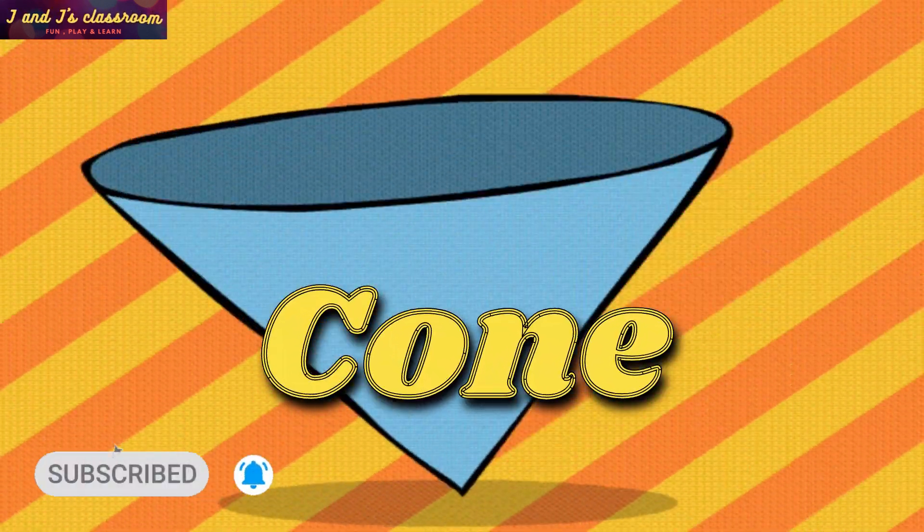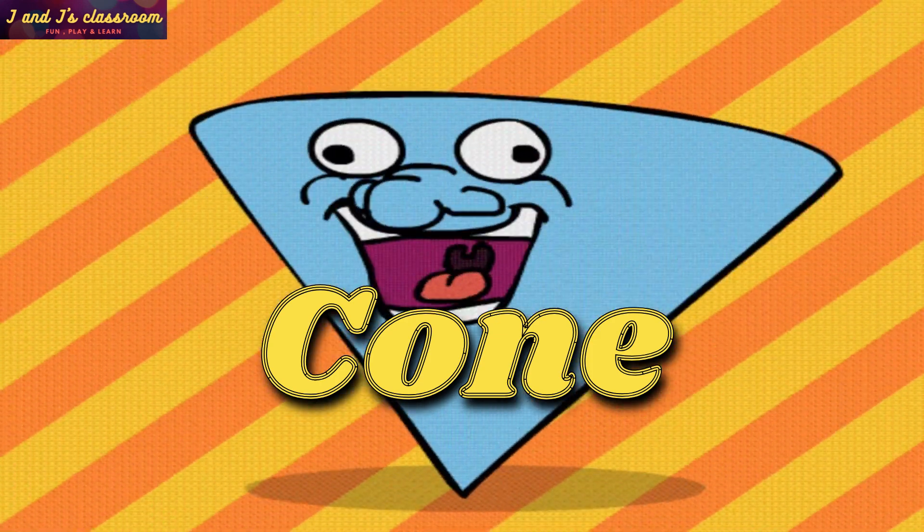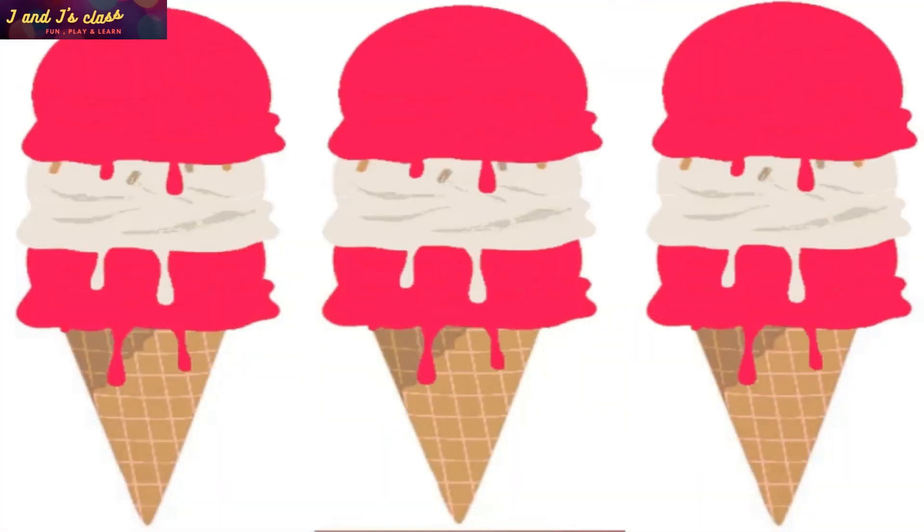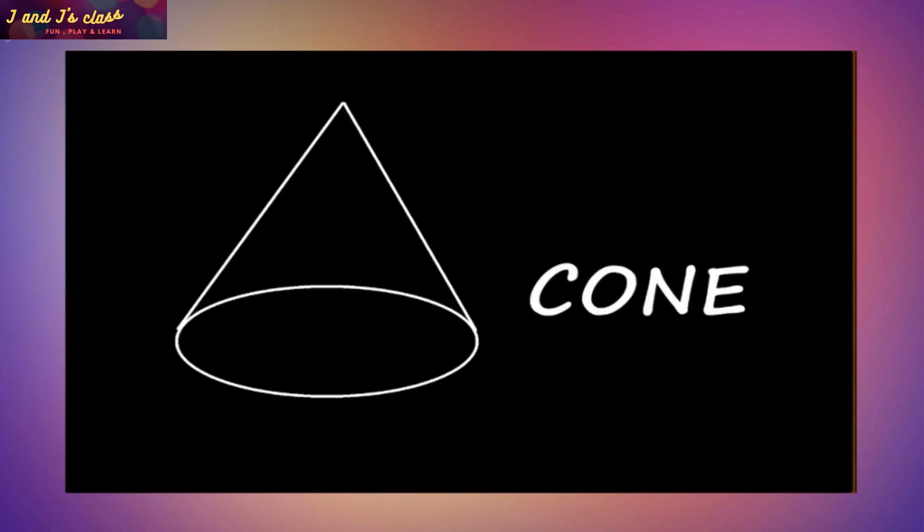Next, Cone. To draw a cone, first draw an oval and draw two straight lines like this. What is it? Cone. C-O-N-E Cone.